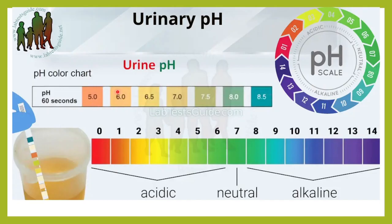This is the urinary strip and you have to read it after dipping the strip in urine for just 60 seconds, or one minute. You will have to see it on the reagent strip which varies from 4.5 or 5 to 8. Around 7 is called neutral — anything less than 7 is acidic and anything more than 7 is alkaline.